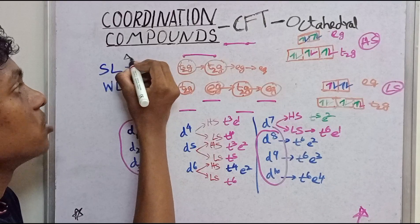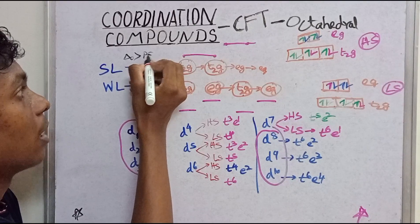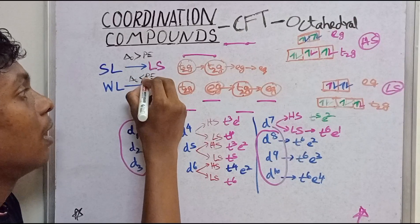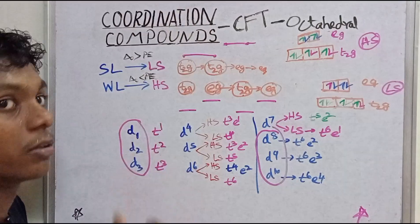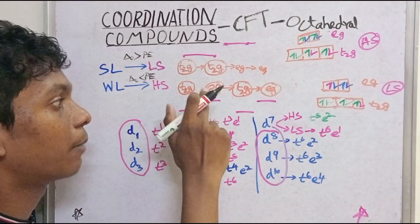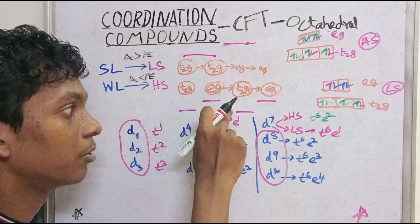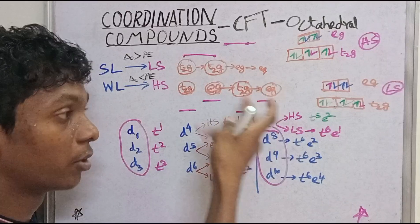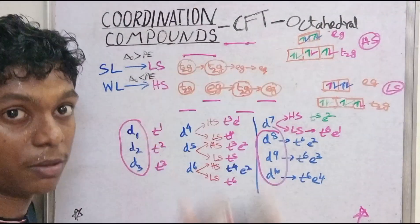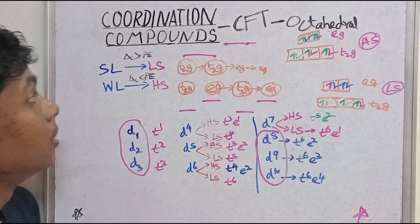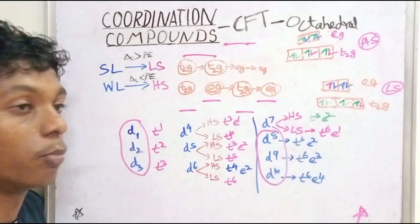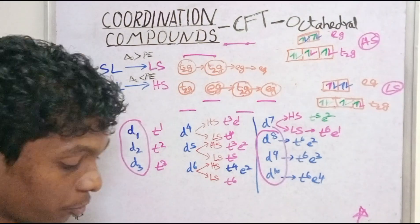Strong ligand: splitting energy is greater than pairing energy — that is why pairing occurs, forming low spin. But in weak ligand, splitting energy is less than pairing energy, so it is easier for electrons to jump to eg rather than pair. That is why you get high spin. The splitting energy determines whether it is high spin or low spin.